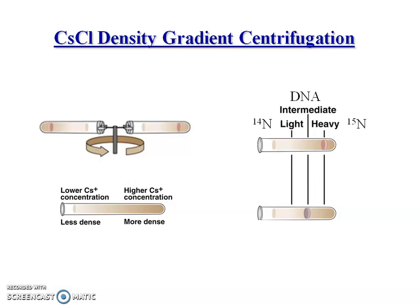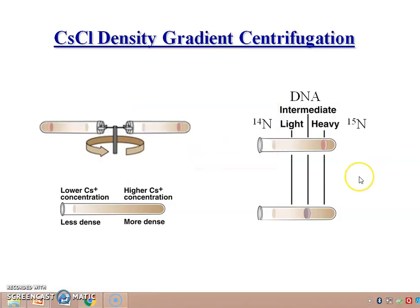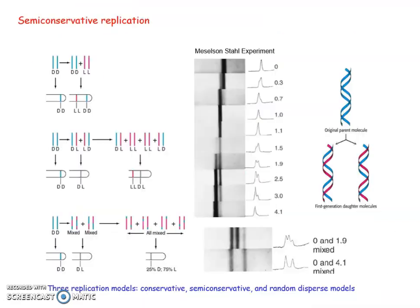DNA containing N-14 forms a light band at lower cesium concentration, N-15 forms a heavy band at higher cesium concentration, and an intermediate band containing both N-14 and N-15 forms a hybrid band. Consistent with semi-conservative replication, they obtained three bands: light, intermediate, and heavy. After evaluating the results, they concluded that only the semi-conservative mode of replication produces this pattern.